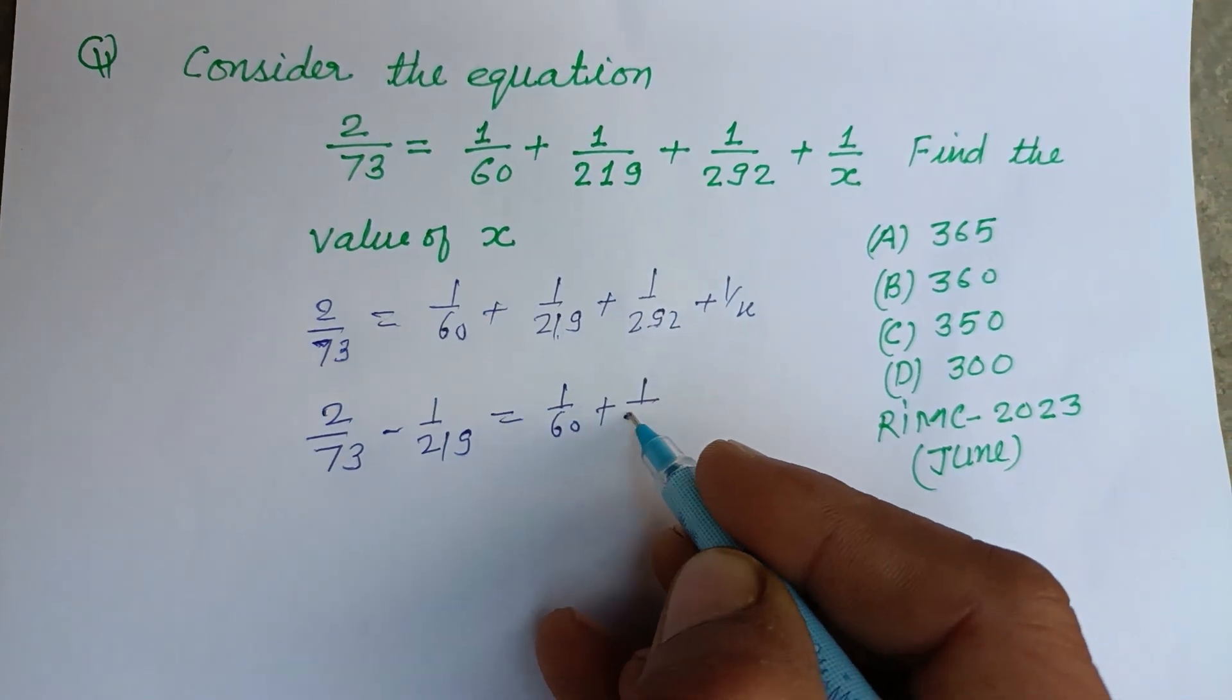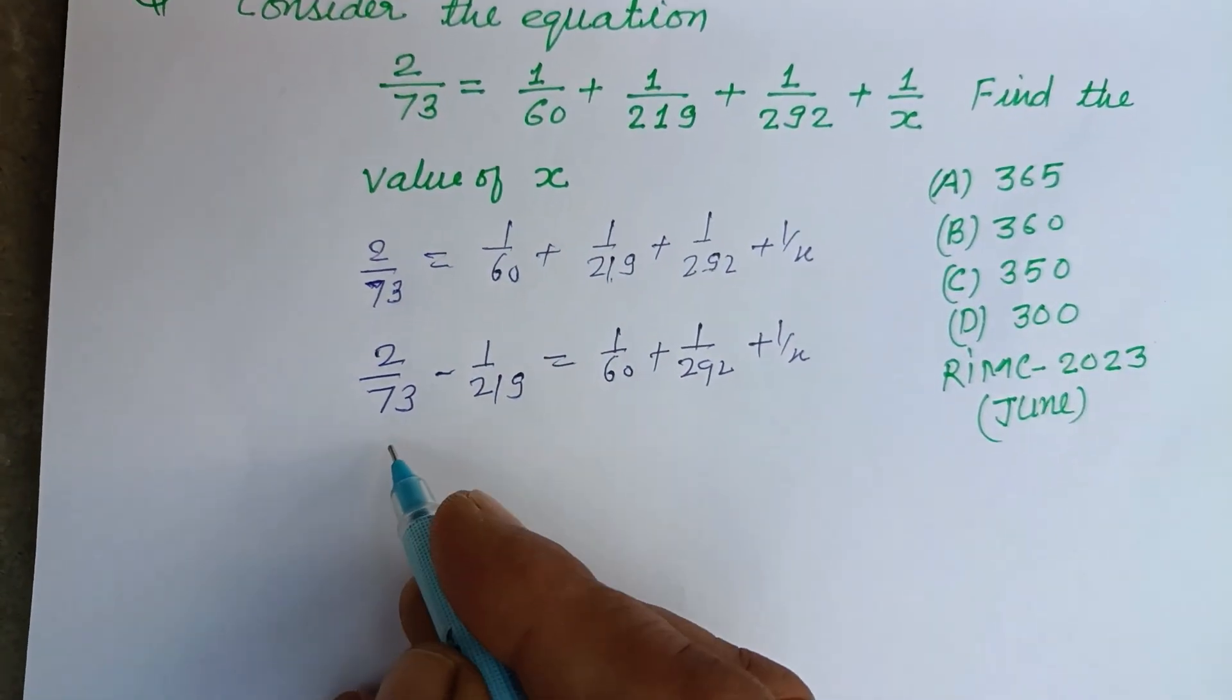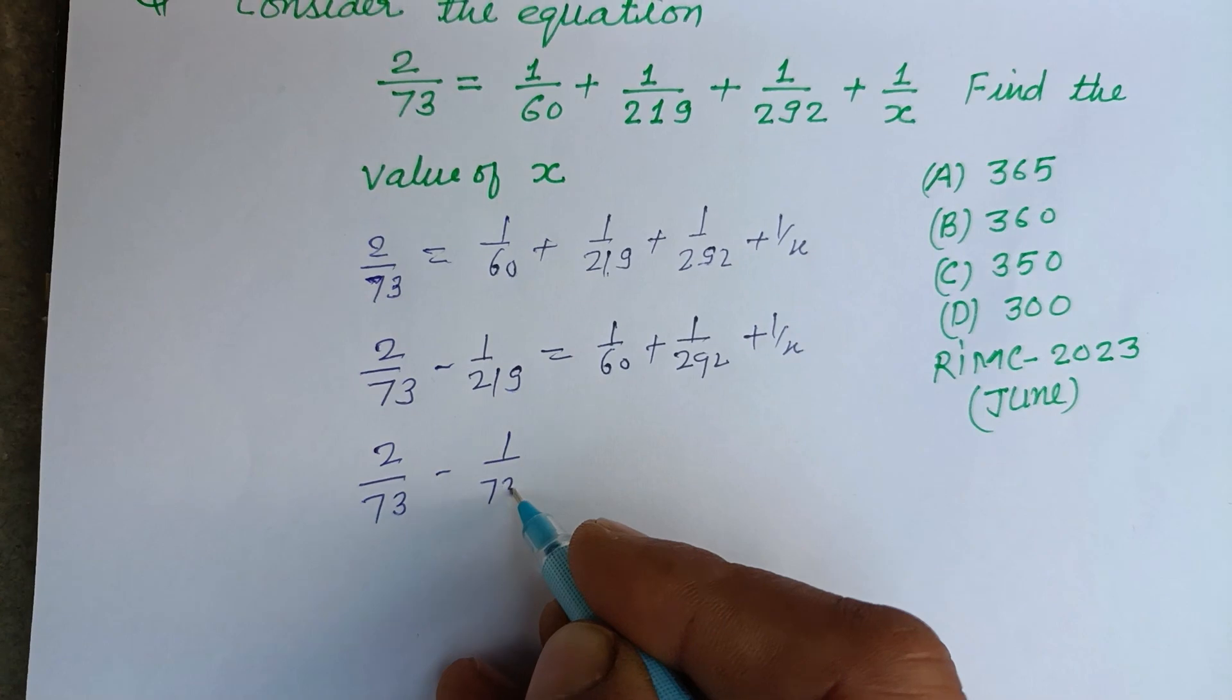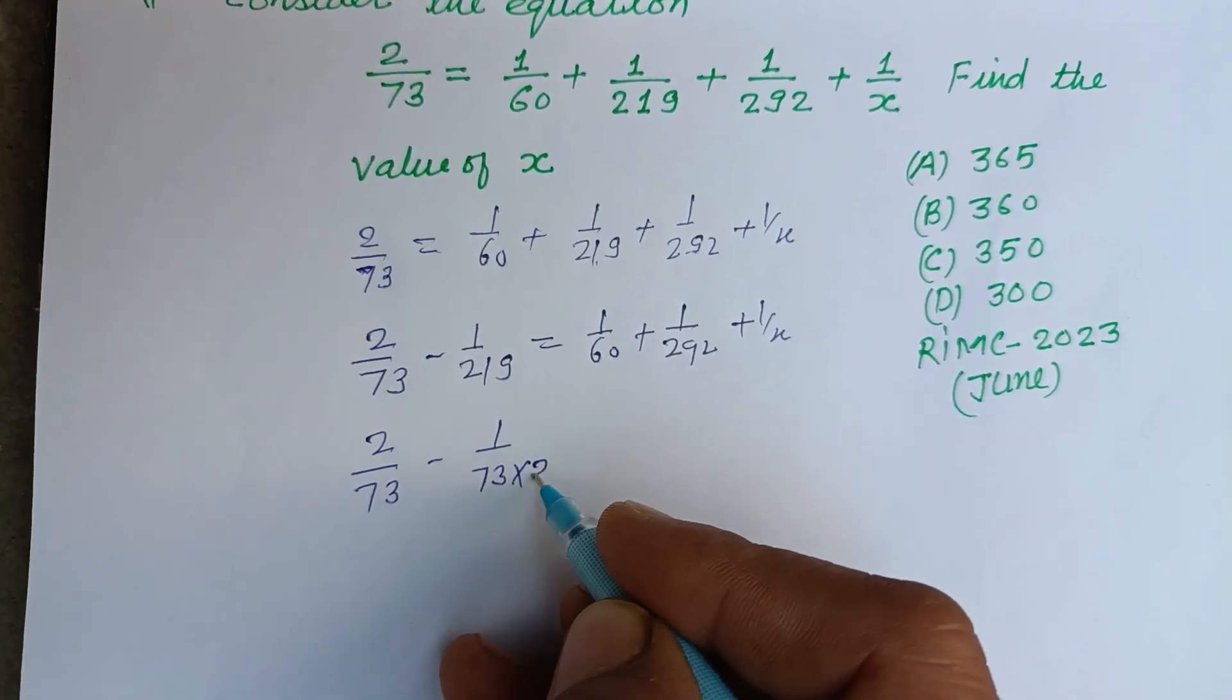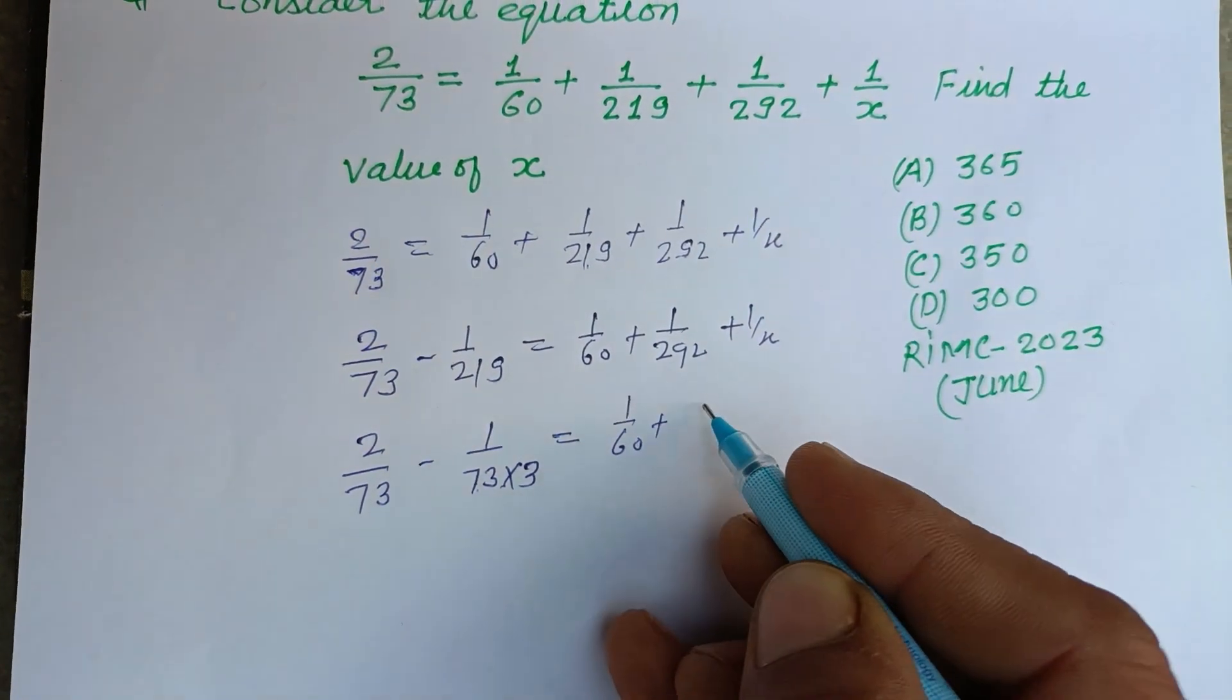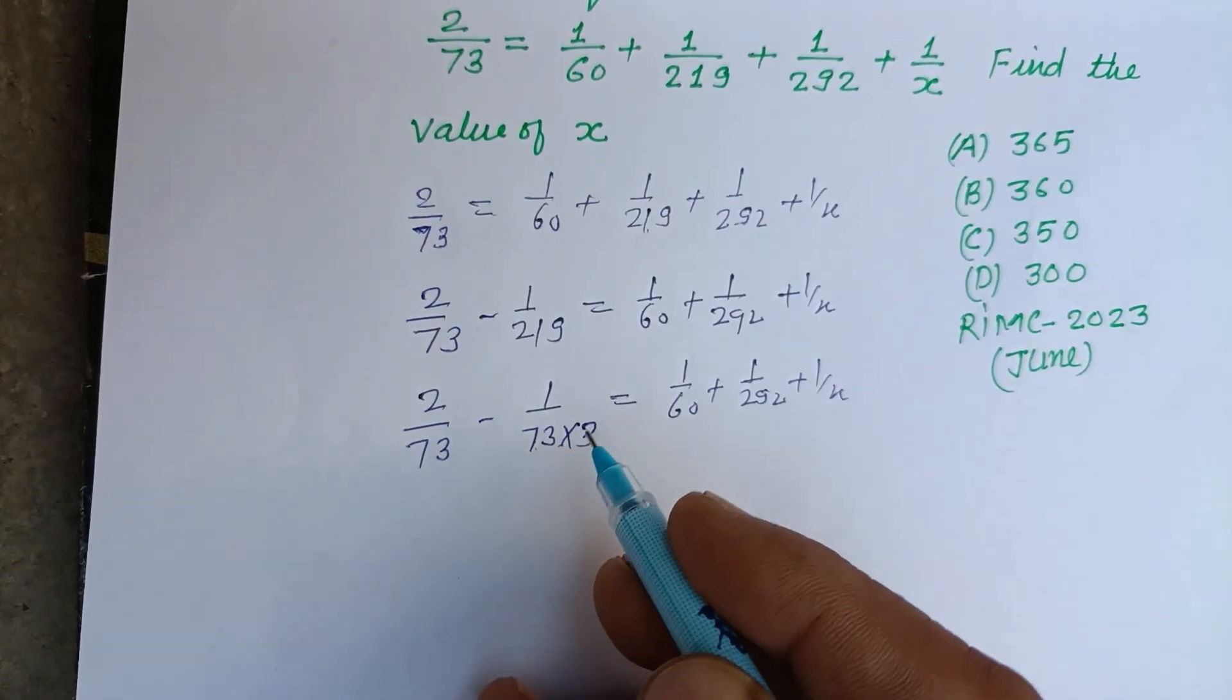Now 219 is 3 times 73, so 3×73 = 219. We can write this as 2/73 - 1/(3×73) = 1/60 + 1/292 + 1/x.